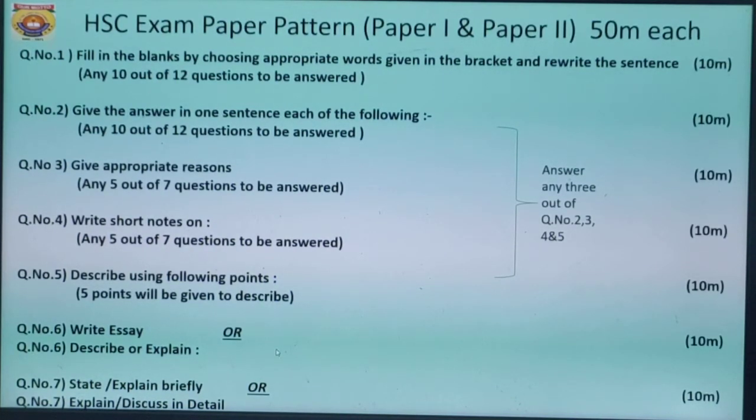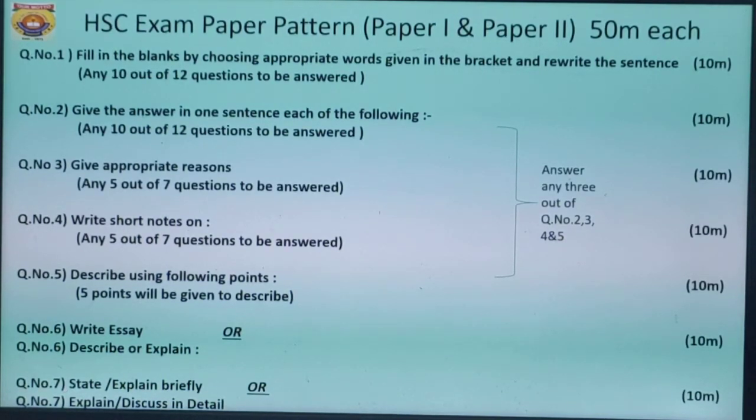Now children, we move on to question number 6. Question number 6 is write essay, or you get an option that is describe or explain. This consists of 10 marks. In this section, it becomes very essential for you to draw the diagram because it increases your marks. Between question number 6 and question number 7, you have to choose only one. Question number 7 gives you two options: first, state or explain briefly, or another option which is explain or discuss in detail. This also consists of 10 marks.